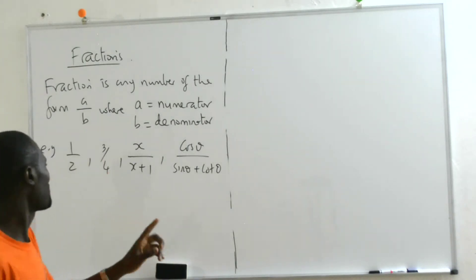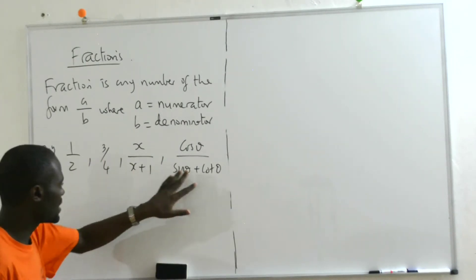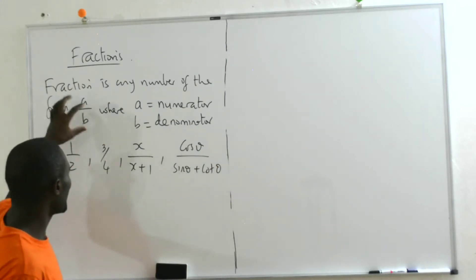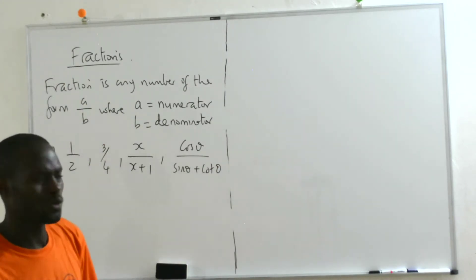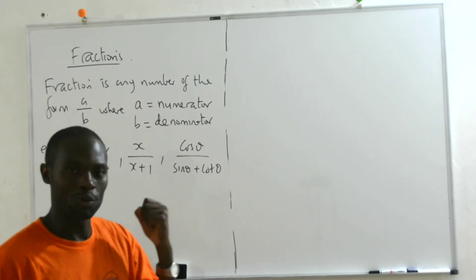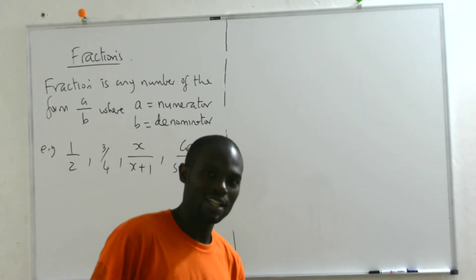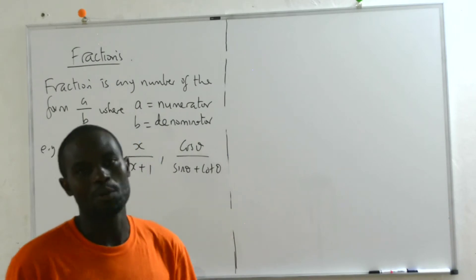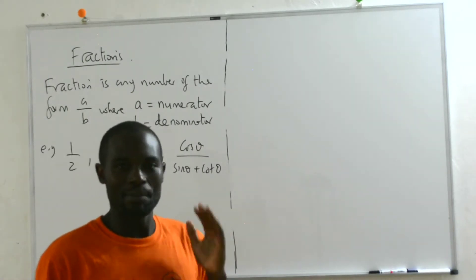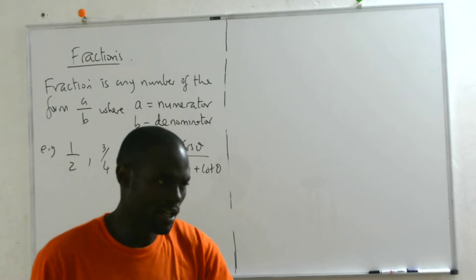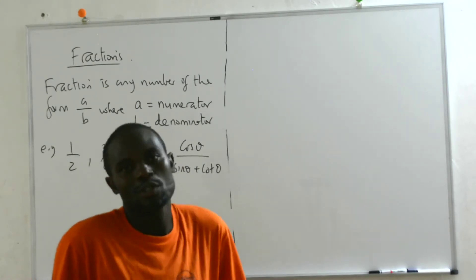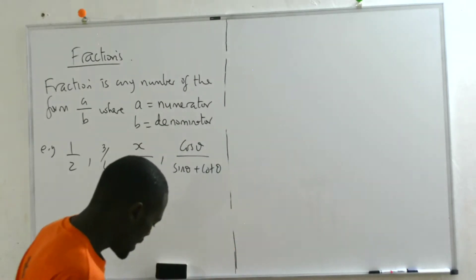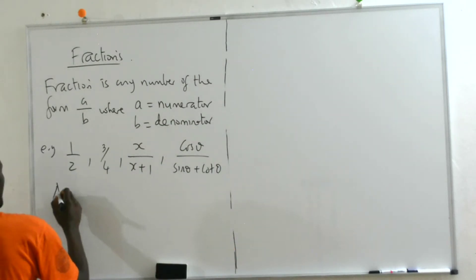All these are fractions because in this case A is 1, B is 2. A is 3, B is 4. A is X and B is the whole of this. So variables can take on anything. But whenever we say fraction, it's always in this form.